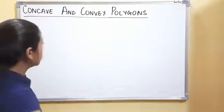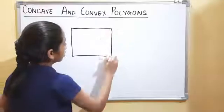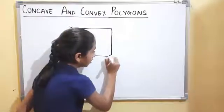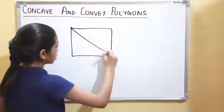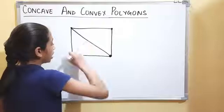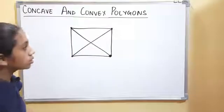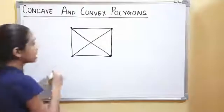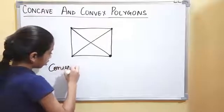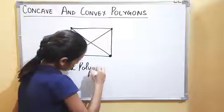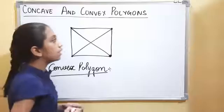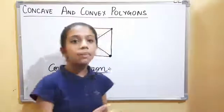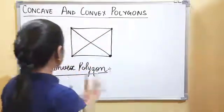Let's look at another example. The diagonal of this vertex connects to this one — I join it like this. The diagonal of this other vertex connects here — I join it like this. Now can you tell me: is this a convex or concave polygon? Yes, this is a convex polygon, because all diagonals lie only inside the shape.